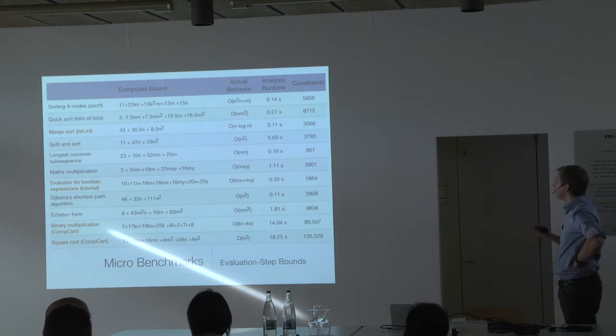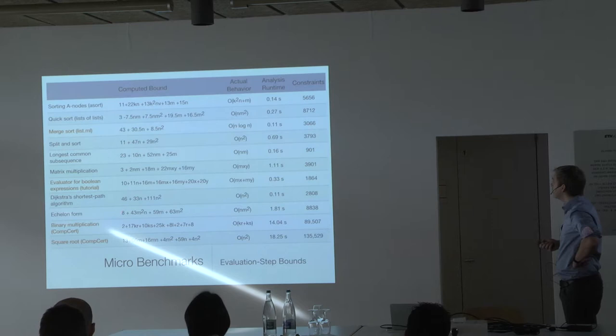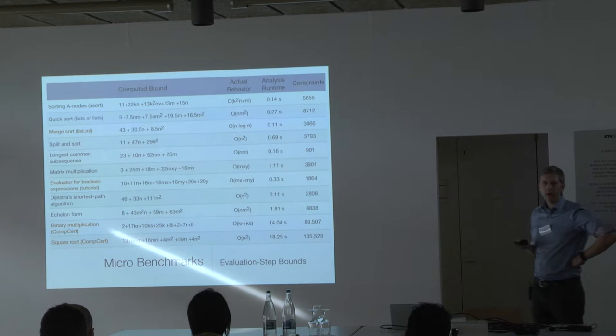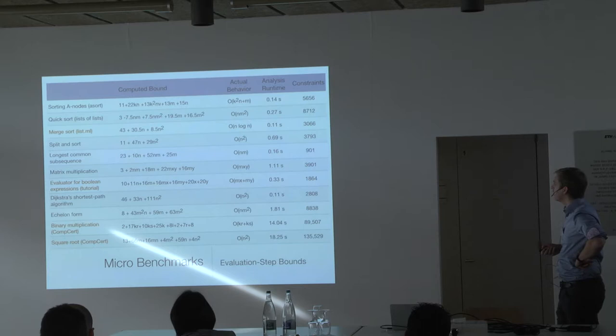For merge sort, we can only derive a quadratic bound, but the actual worst-case cost of merge sort is O(n log n), so we cannot get a tight bound for that one.